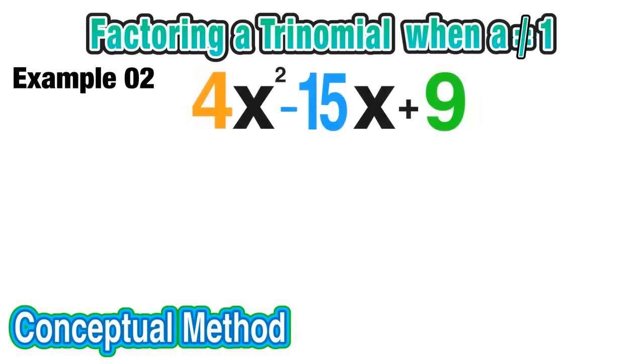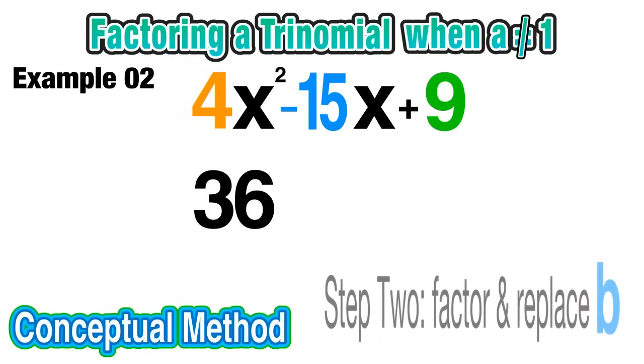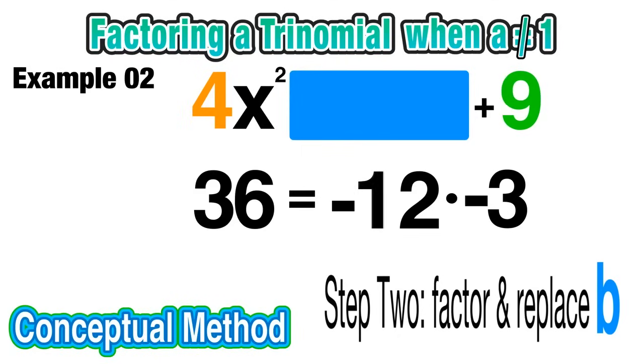For this next example, we want to factor the trinomial 4x²-15x+9. And again, we should notice that we cannot pull a GCF from this trinomial. So our first step is to multiply a and c: 4 times positive 9, which we know is 36. Next we have to find two factors of 36 whose sum is -15, and we should come up with -12 and -3, since -12 times -3 is positive 36. And now we can replace that middle -15x term with our new terms, -12x and -3x.